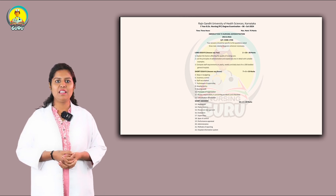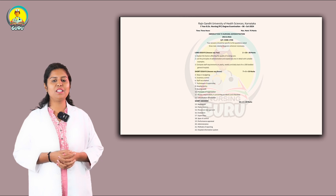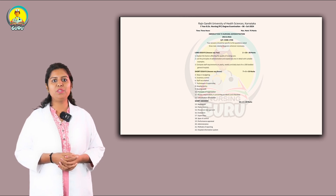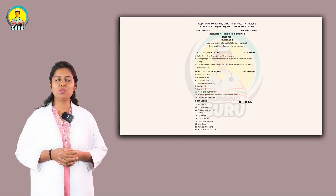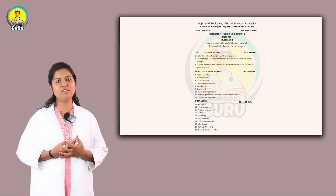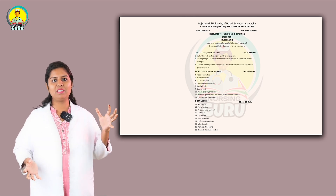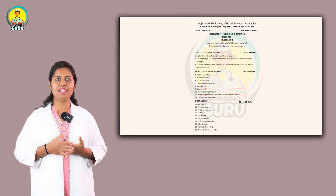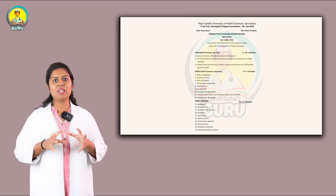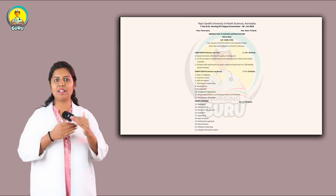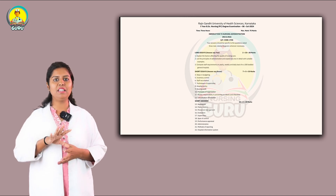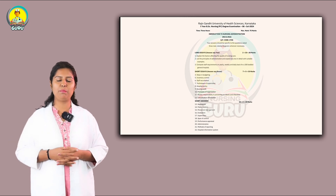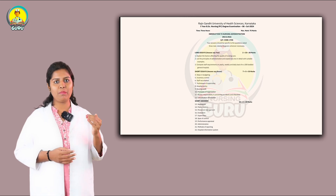Now let's see the long essay questions. The first one is: explain the factors affecting the quality of nursing care. This is a very important question from Unit 2. You can write at least 2 to 3 pages — define quality of nursing care, make a schematic diagram, write down points, and add 2-3 lines of explanation under each point. This makes it easy to score 8 to 9 marks.